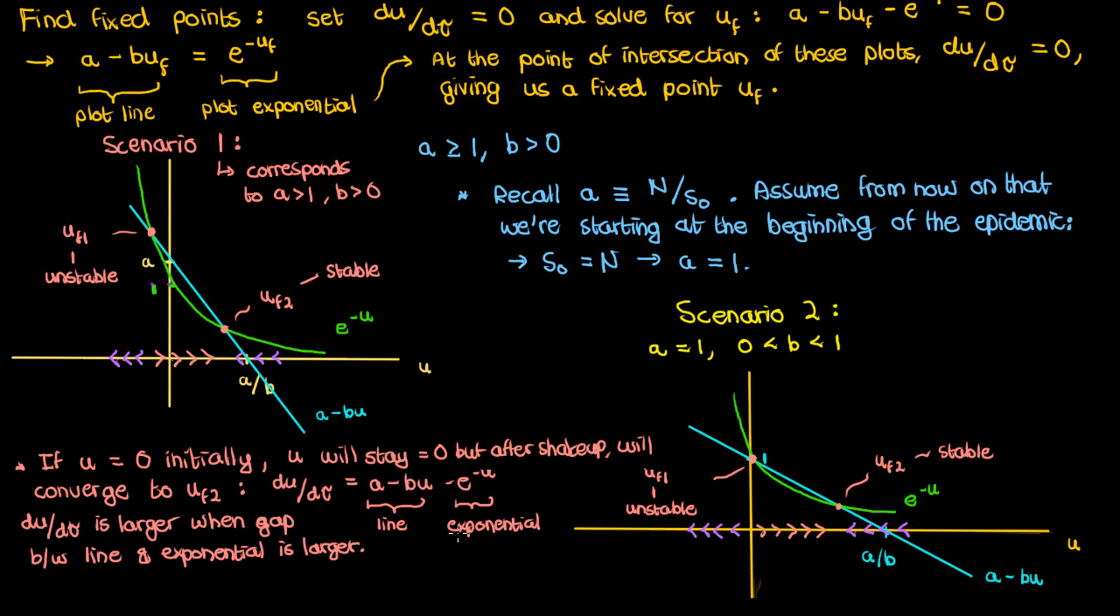In fact what happens is that initially the difference between the exponential and the line is large so the derivative is going to be very high.